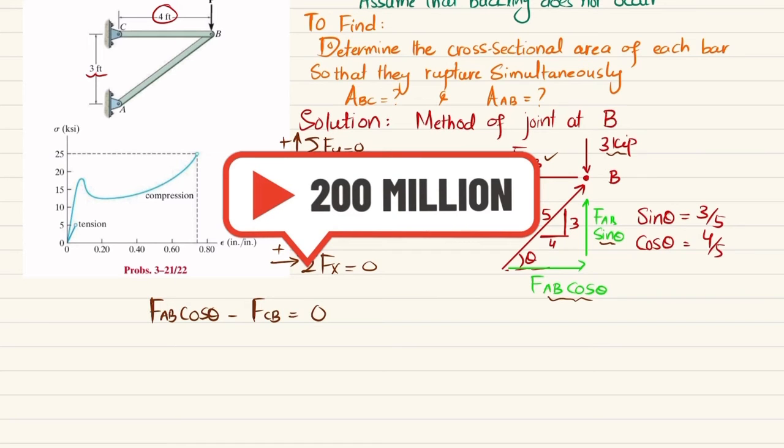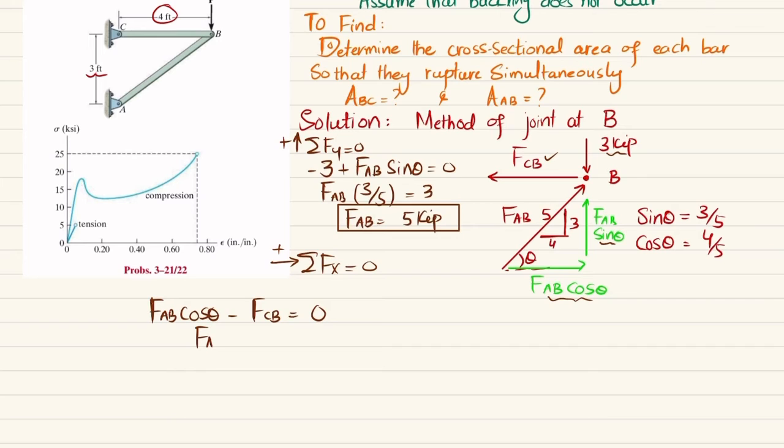And you can see that cos theta is equal to 4 over 5. So FAB is 5 multiplied by 4 over 5 will give you FCB. And you can see that FCB will be equal to 4 kips. Now you have both forces in the members: in member AB it is 5 kips and in member CB it is 4 kips.